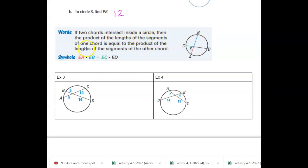If two chords intersect inside a circle, then the product of the lengths of the segment of one chord is equal to the product of the lengths of the other chord. Okay? And so we write this out in symbols, but it says if I have EA times EB, notice how that's one chord together. And that's also going to equal the product of the other two chord parts. So EC times ED.